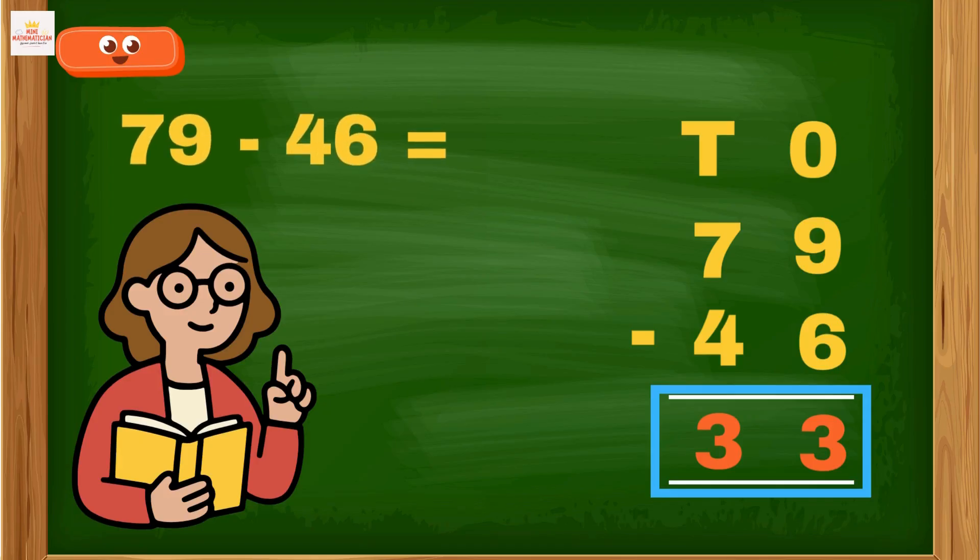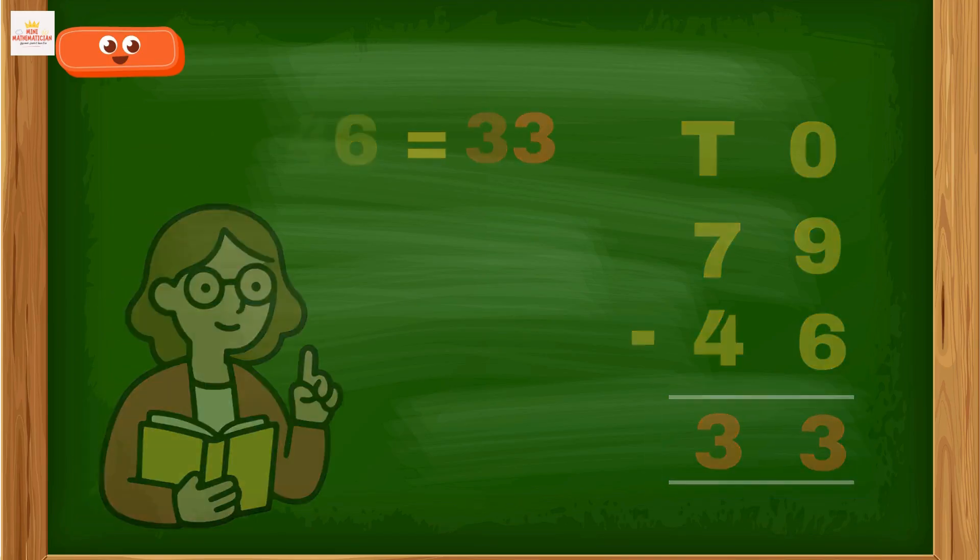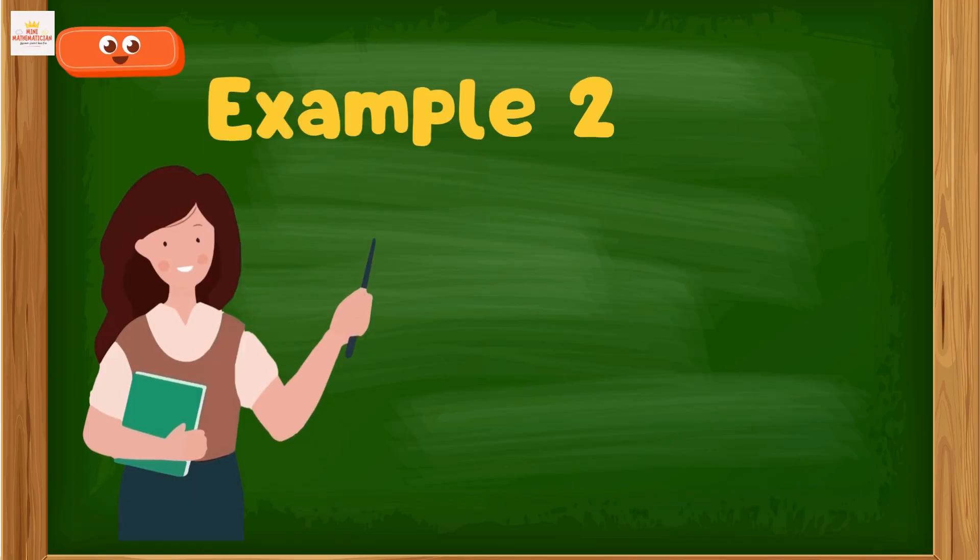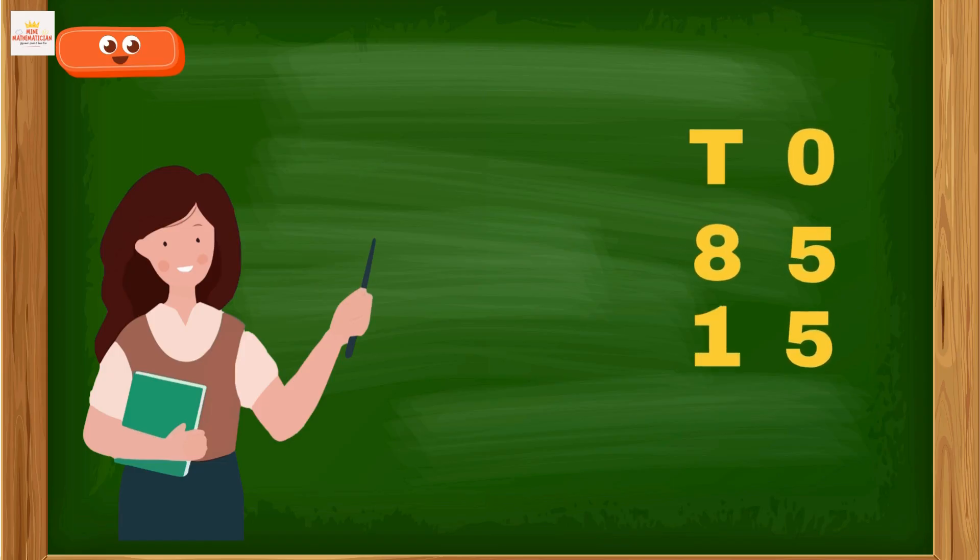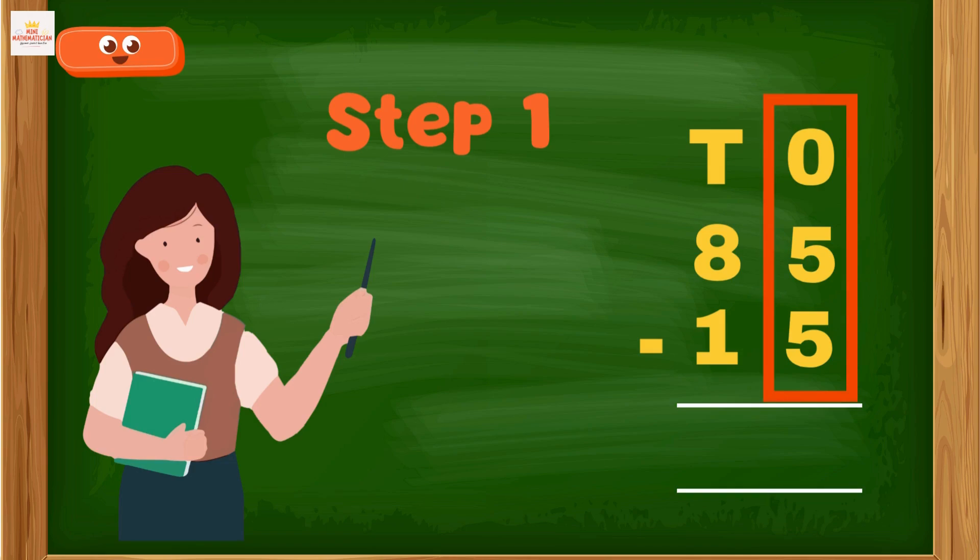Example 2: 85 minus 15. Step one: Start from the ones place. The numbers are five and five. Five minus five equals zero. Remember kids, in subtraction when the top and bottom numbers are the same, the answer is always zero.